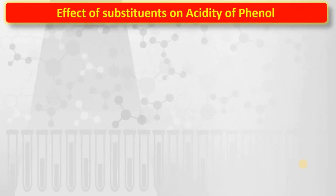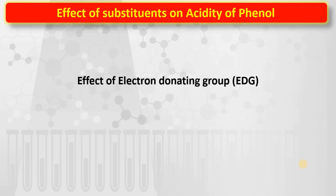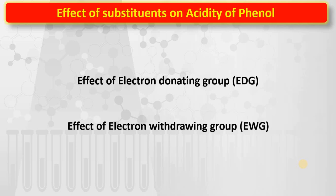Now, the effect of substituents on the acidity of phenols: substituents decide the strength of these phenols. There are two types — electron donating groups (EDG) and electron withdrawing groups (EWG).